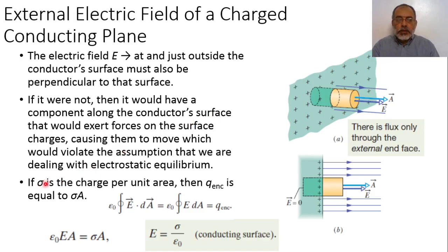Assuming that the charge distribution along the surface is sigma, where sigma is in coulombs per meter squared, it is required to find out the electric field going outside this conducting surface. To obtain the electric field, we are going to draw a Gaussian surface consisting of a cylindrical shape.